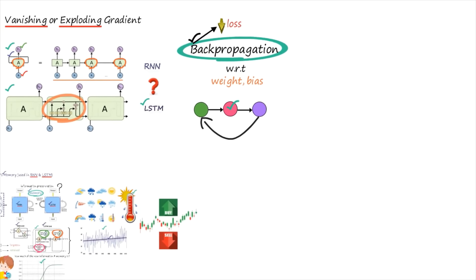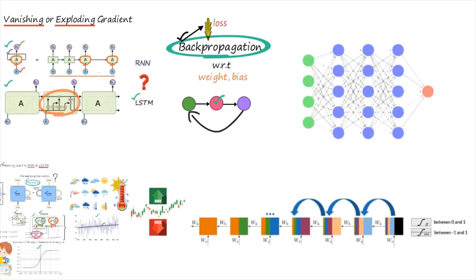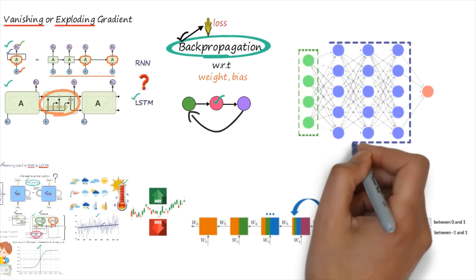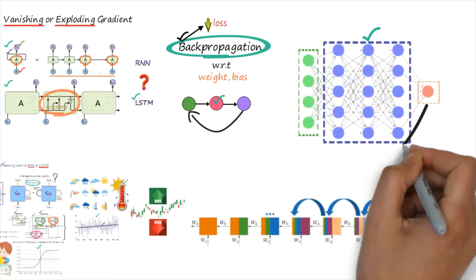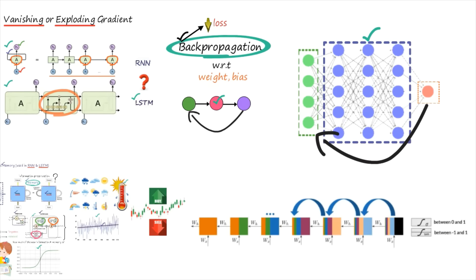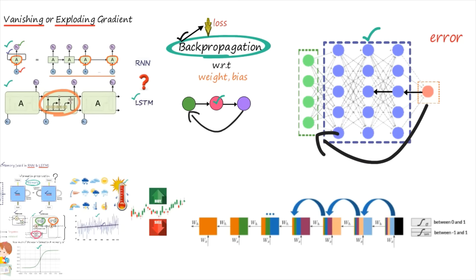In a deep learning model with many hidden layers between the input and output layers, during training the gradient can become extremely large. Whenever we are backpropagating — calculating the error and propagating it back — at some point the gradient value may become very, very large.